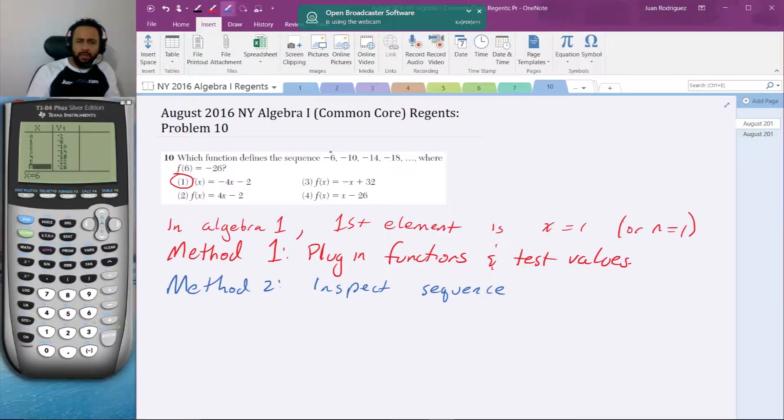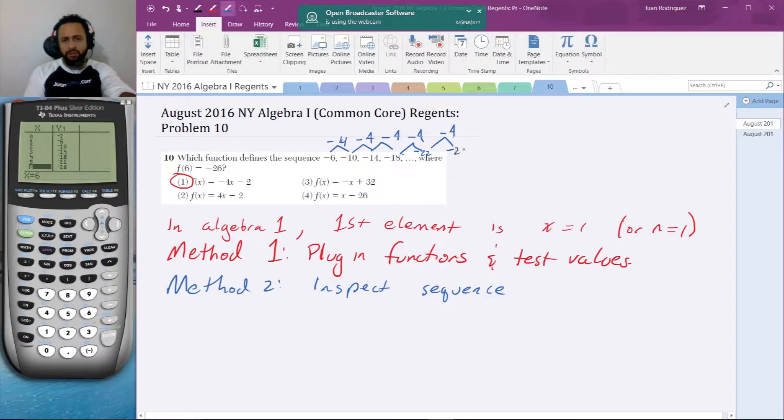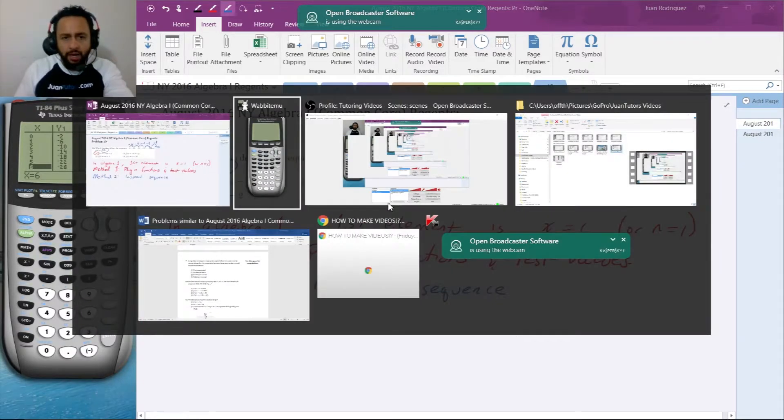I see in the sequence that it decreases from negative 6 to negative 10, that's a subtraction of four. That's also from negative 10 to negative 14, that's a subtraction of four. And from negative 14 to negative 18, that's a subtraction of four. If I subtract four I get negative 22, and if I subtract four again to get the sixth element I get to negative 26, as I should expect. This is the definition of an arithmetic sequence. The number that I'm adding is negative four.